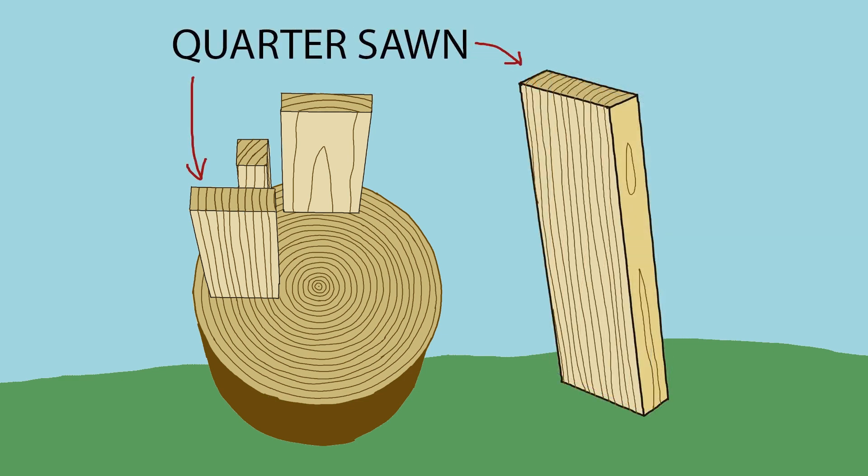The face of a quarter sawn board has grain that forms tight parallel lines, with grain much tighter than that of plain sawn. Notice that the edge grain is much more open than that of the face.